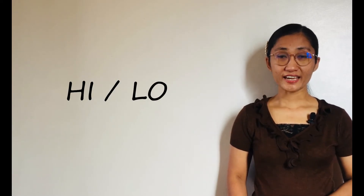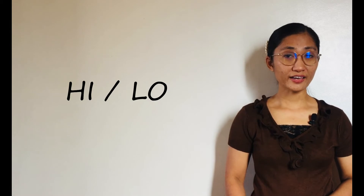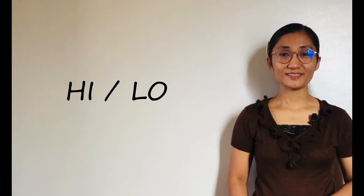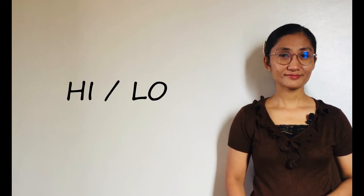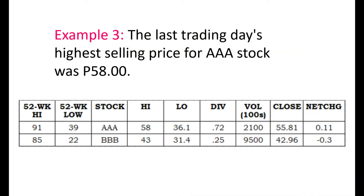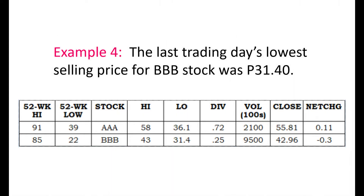HI-LO, or high or low, is the stock's highest or lowest selling price from the previous trading day. Example 3: The last trading day's highest selling price for AAA stock was 58 pesos. Example 4: The last trading day's lowest selling price for BBB stock was 31 pesos and 40 centavos.